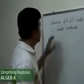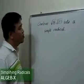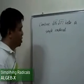In this next problem, we are asked to combine square root of 15 times square root of 27 into a single radical.